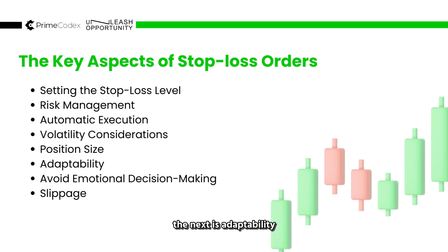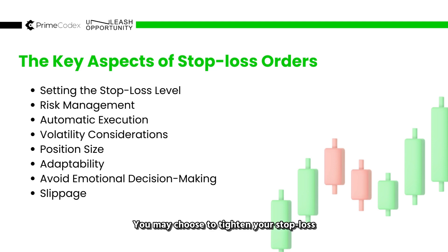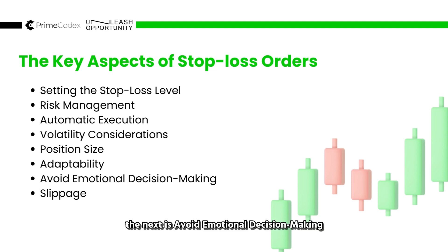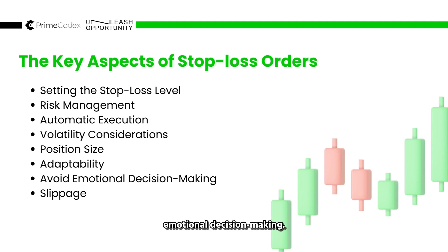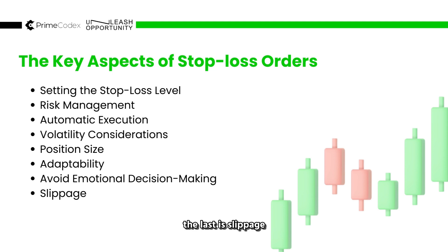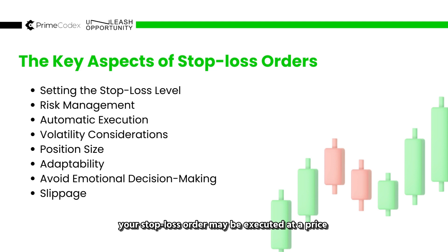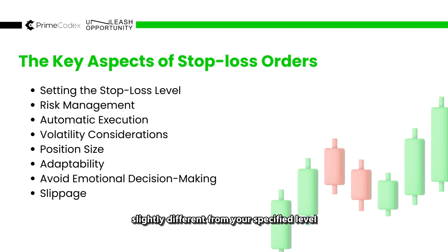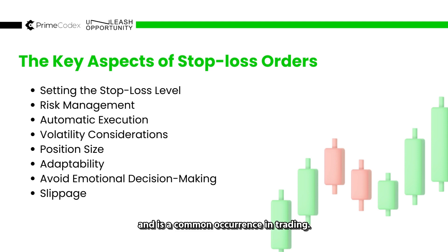The next is adaptability. It is important to revisit and possibly adjust your stop loss levels as the trade progresses and market conditions change. You may choose to tighten your stop loss to lock in profits or adjust it to reduce potential losses if the trade is moving against you. The next is avoiding emotional decision making — one of the key benefits of stop loss orders is that it helps traders avoid emotional decision making, preventing the temptation to hold onto a losing position in the hope that it will turn around. Finally, keep in mind that during volatile market conditions or fast price movements, your stop loss order may be executed at a price slightly different from your specified level. This is known as slippage and is a common occurrence in trading.